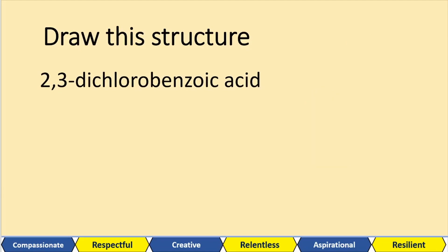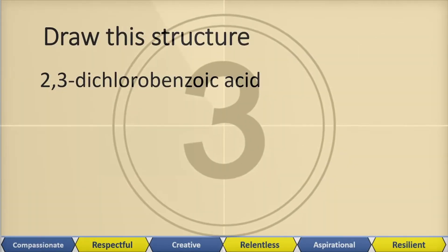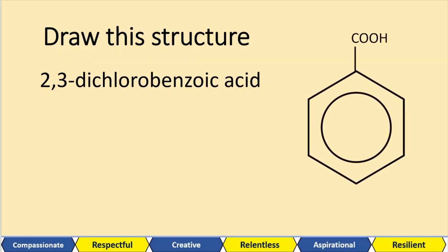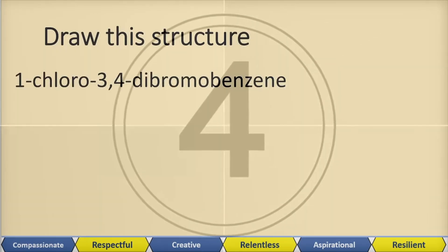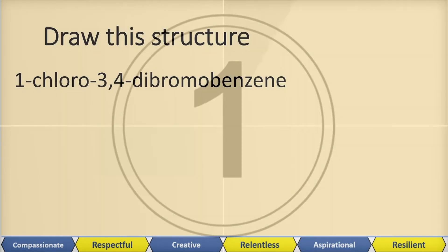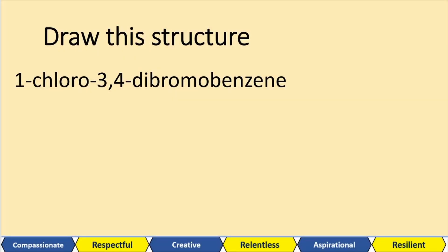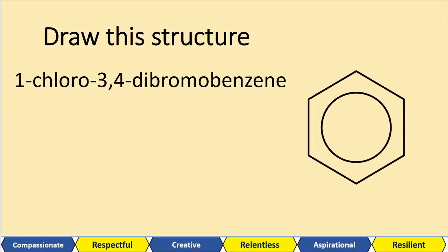What about this one? We can start with benzoic acid as the base — that's the 1 position. We've got 2, 3. And starting with benzene, we'll need to add 1-chloro, so chloro is in the 1 position, and then 3,4-dibromo — so 3,4 positions for the bromines.